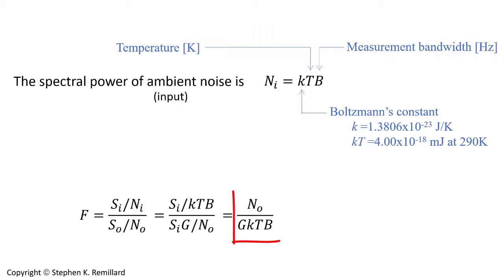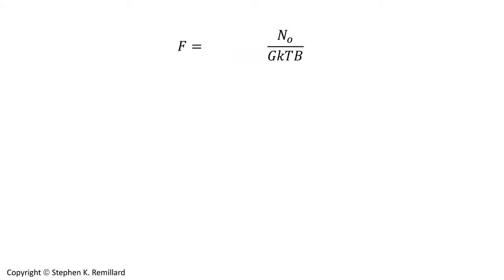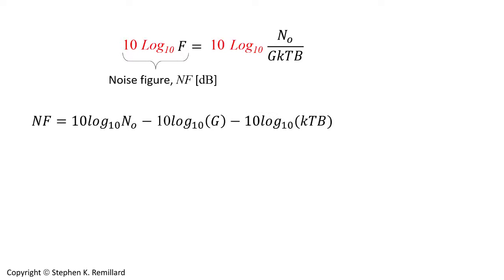Let's take this expression and do some things to it. First let's take the logarithm of both sides and then let's multiply both sides by 10. The left-hand side is the noise factor in decibels. Whenever you take 10 times log base 10 of a quantity you have that quantity in decibels and it's called the noise figure. Let's unpack the right-hand side a little bit. It's a ratio inside a logarithm.